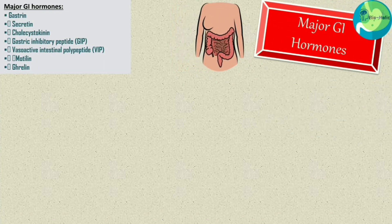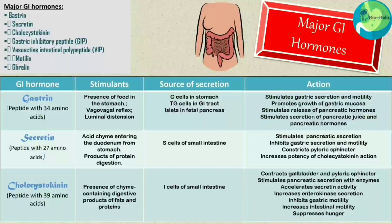Moving to the major gastrointestinal hormones: gastrin, secretin, cholecystokinin, gastric inhibitory peptide (GIP), vasoactive intestinal polypeptide (VIP), motilin, and ghrelin. Gastrin is a peptide with 34 amino acids. Presence of food in the stomach, vago-vagal reflex, and luminal distension stimulate gastrin secretion. The source of gastrin is G cells in the stomach, TG cells in the GI tract, and islets in the fetal pancreas.